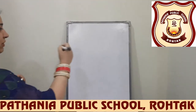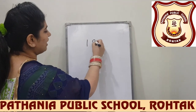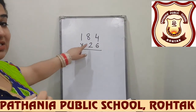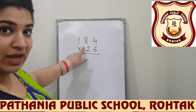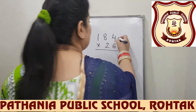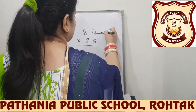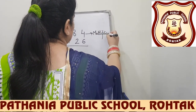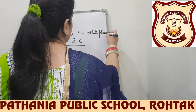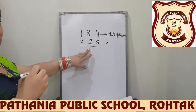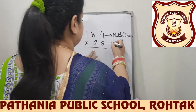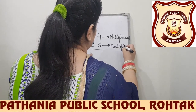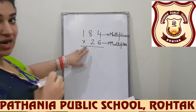So if we have to multiply 184 with 26 — here 184 is called the multiplicand and 26 is called the multiplier. Let's start multiplication.